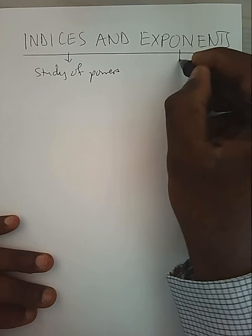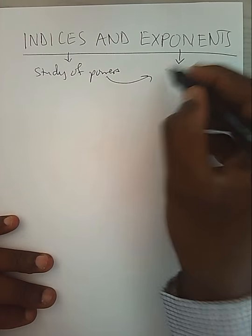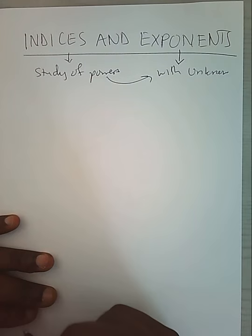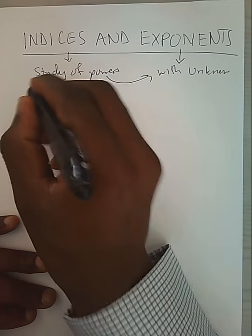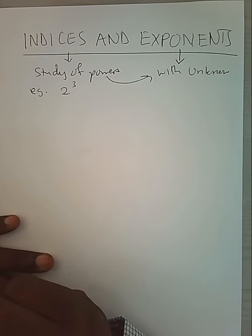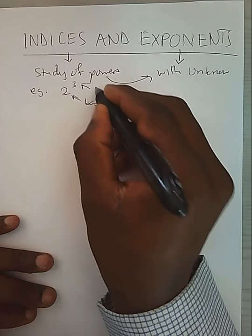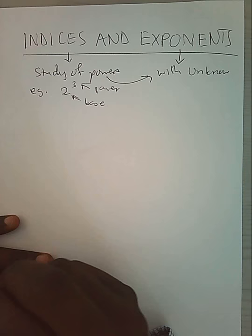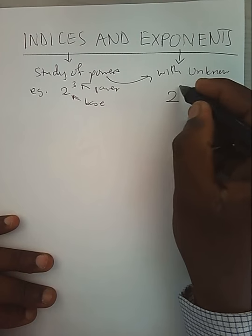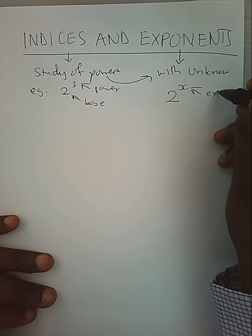While we talk about exponents, we are involving powers with unknowns. For example, 2 power 3: 2 is our base, 3 is our power. But involving exponents, we can have 2 power x, where x is our exponent.